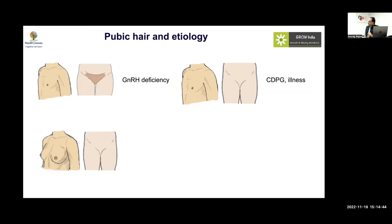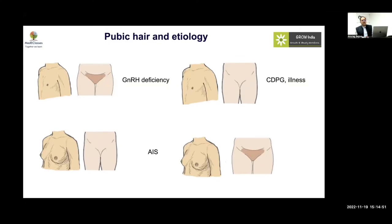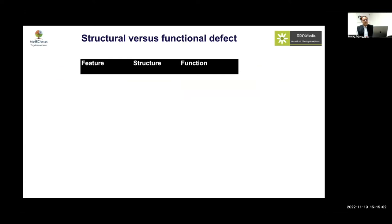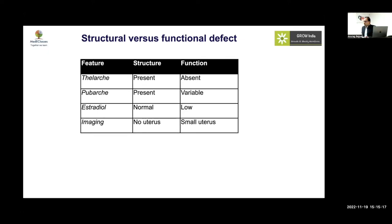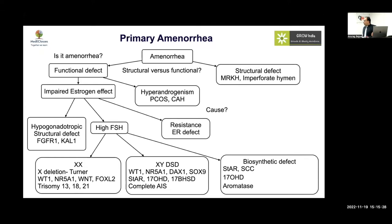Normal breast development with sparse pubic hair suggests androgen insensitivity syndrome. Normal breast with normal pubic hair and amenorrhea — look for a structural malformation. To differentiate structural from functional: thelarche and pubarche present with normal estradiol points to structural defect — go for imaging. If thelarche is absent and pubarche variable, consider hypogonadotropic or hypergonadotropic hypogonadism as the functional cause.